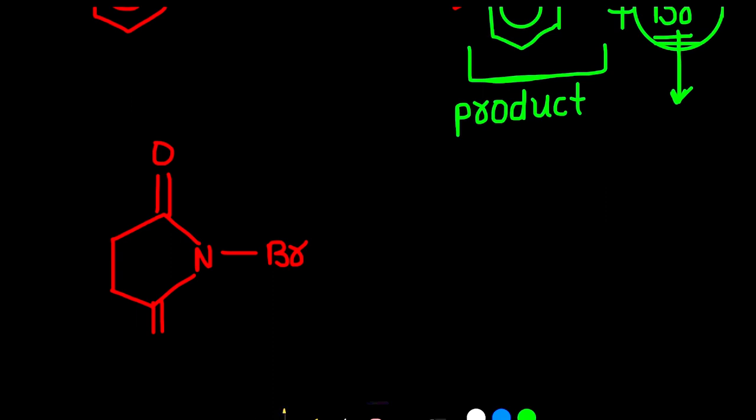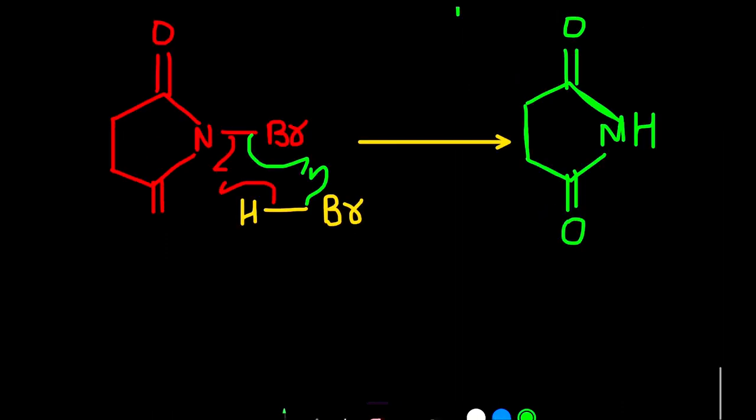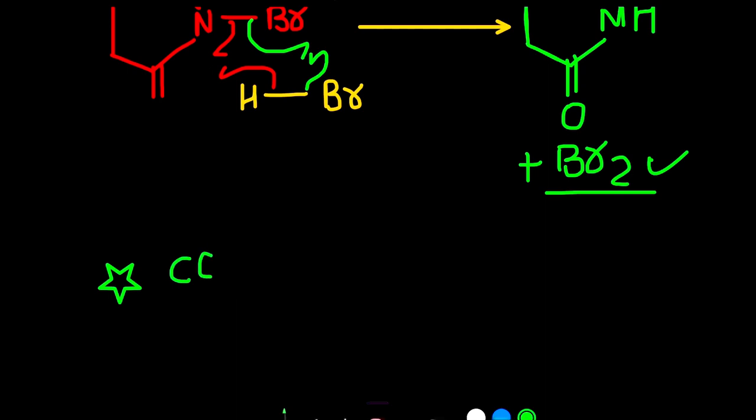During the reaction, HBr is also produced. Now, the homolytic cleavage of both compounds, and we get amide and Br2. And this Br2 is used to generate new bromine radical. That's why concentration of Br2 and HBr is under control.